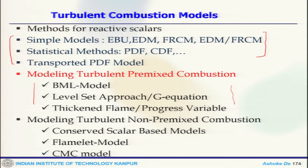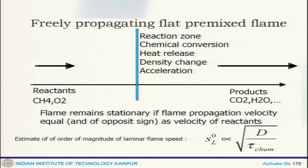Just to quickly look at a freely propagating premixed flame: reactants come in, these are the products, and this is the reaction zone where chemical reaction takes place. Because of that, there would be heat release, density change, and the flow accelerates. One of the very fundamental properties of the premixed flame is the laminar flame velocity or laminar burning speed, and the second one is the flame thickness.